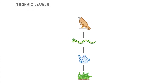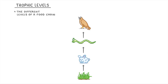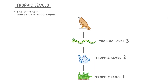In this video we're looking at trophic levels, which are basically just the different levels within a food chain. In this example, the grass would be trophic level 1, the rabbit would be trophic level 2, the snake is trophic level 3, and the hawk is trophic level 4.